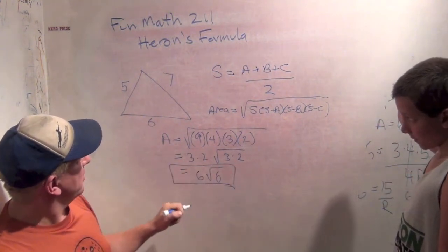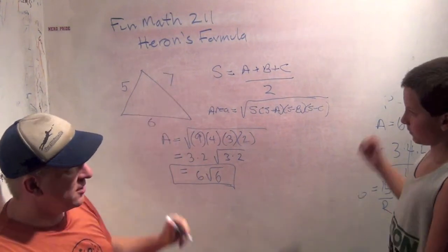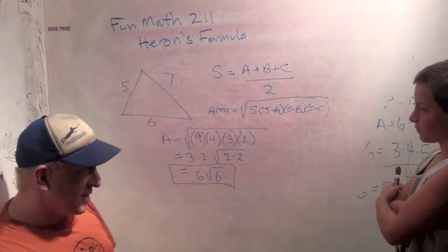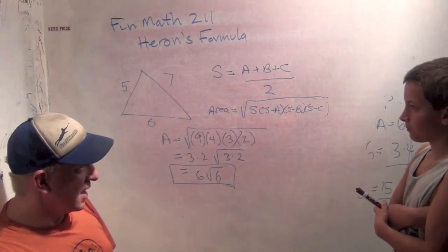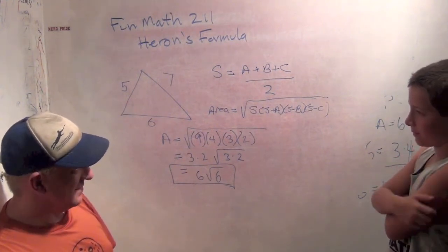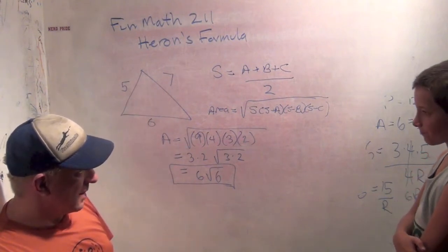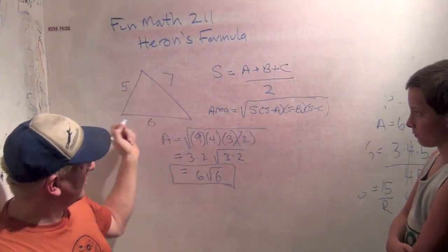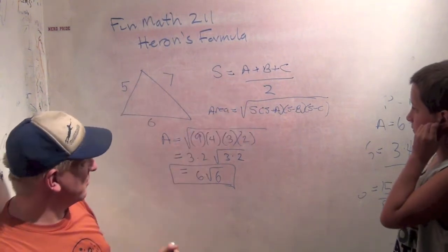So Heron's formula is really useful because most of the time when you have a triangle, you know, if I go to the store and I buy a triangle and bring it home, I can measure the sides really easily. So most of the time I know what the side lengths are.